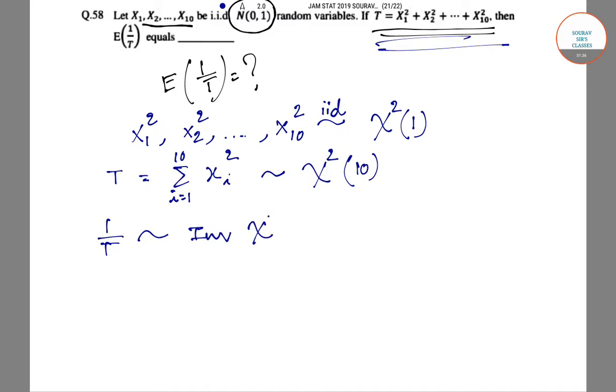So this is inverse chi-square distribution. This is very important, inverse chi-square distribution. As T is following chi-square 10, so 1 by T will follow inverse of chi-square 10. So we will have to find expectation of 1 by T.